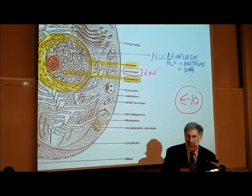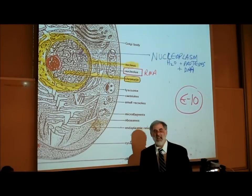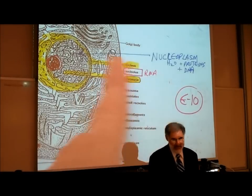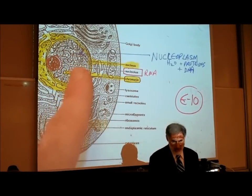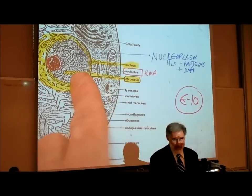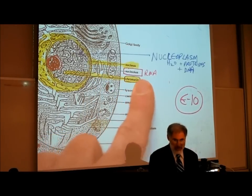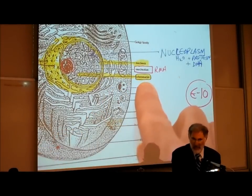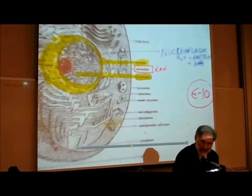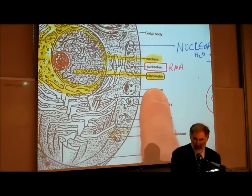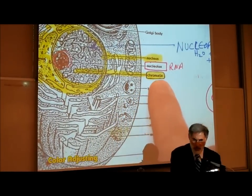Nucleoplasm, like cytoplasm, is mostly water and proteins, having the consistency of jello. In addition, there's DNA in the nucleoplasm. You'll notice a label on your picture that says chromatin — that's the name we give to DNA when it's uncoiled.